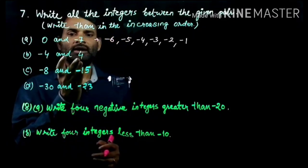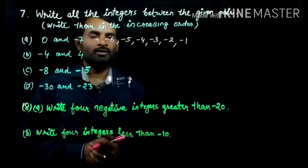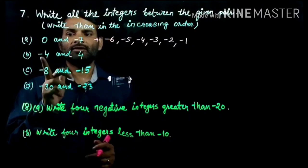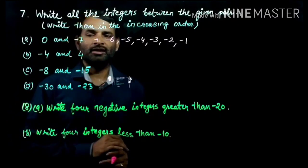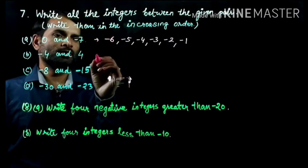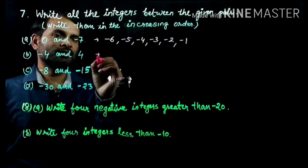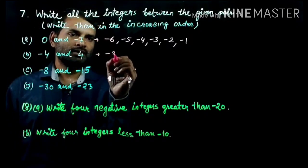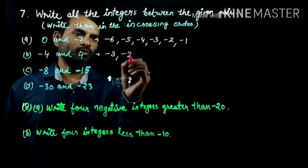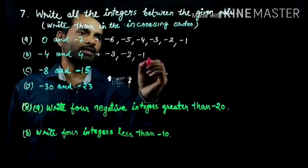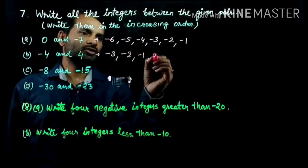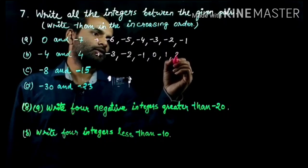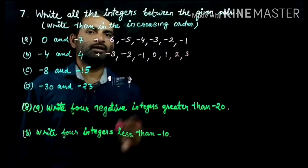Second pair is minus 4 and 4. First you write the small number. Minus 4 is the small number. So: minus 4, minus 3, minus 2, minus 1, 0, 1, 2, and 3.